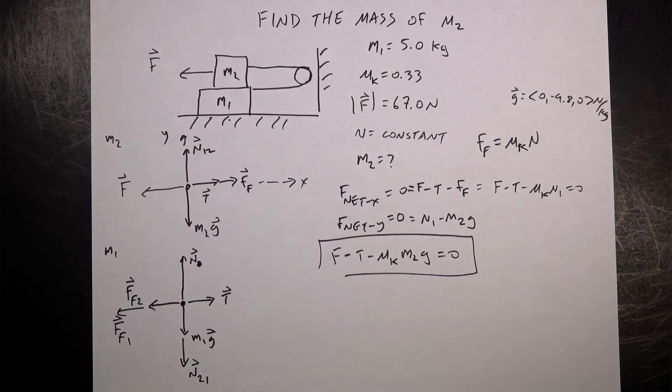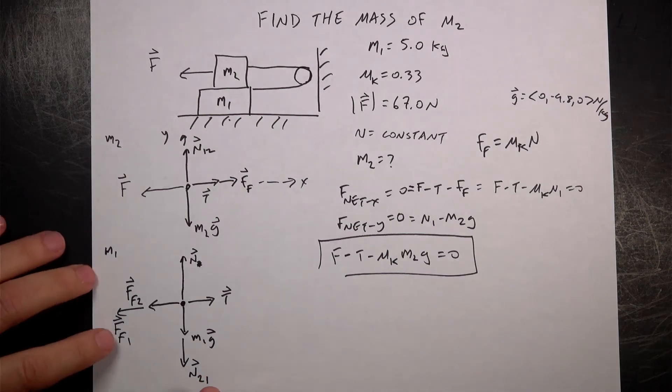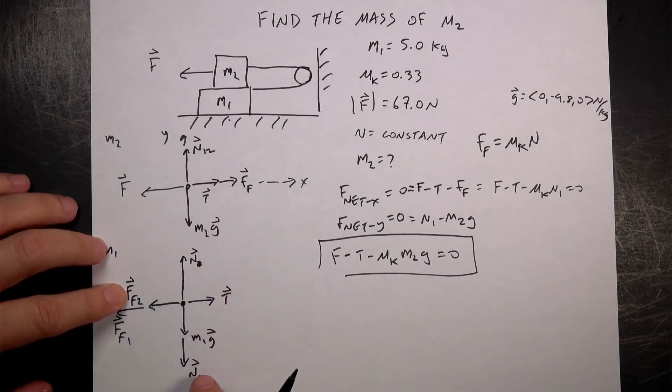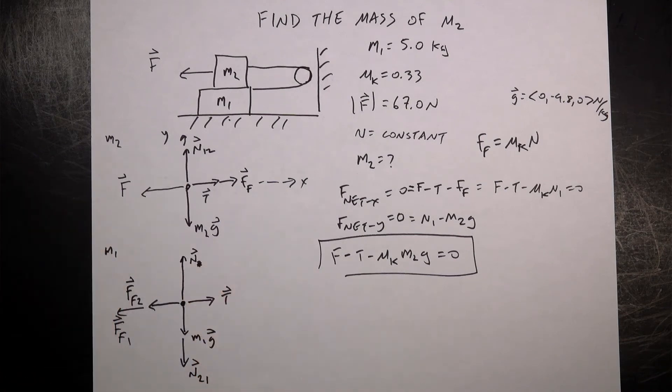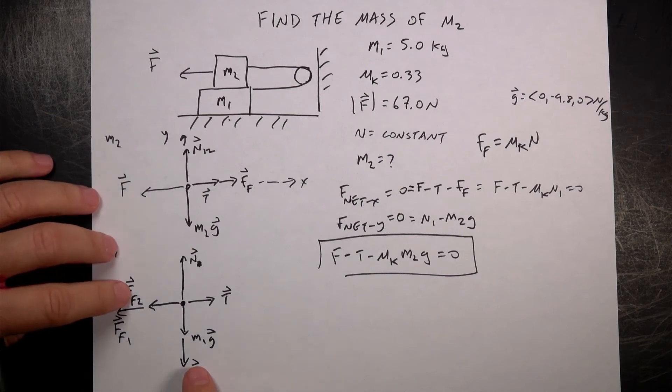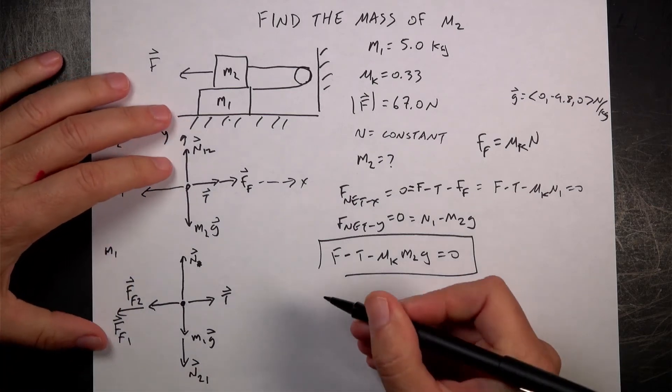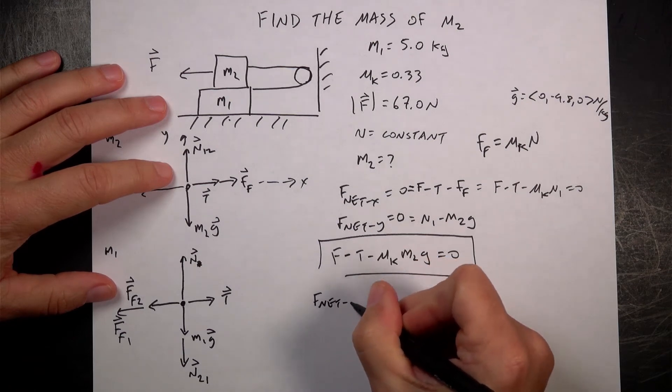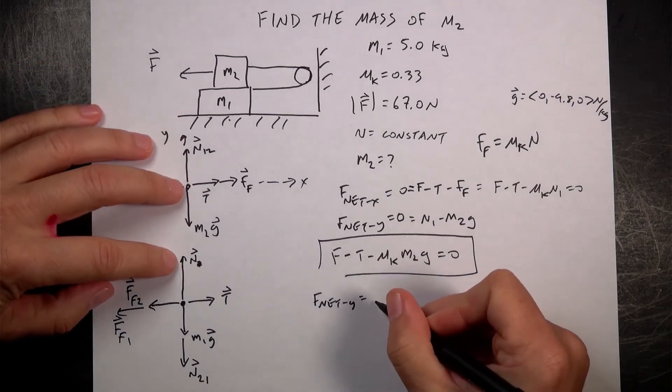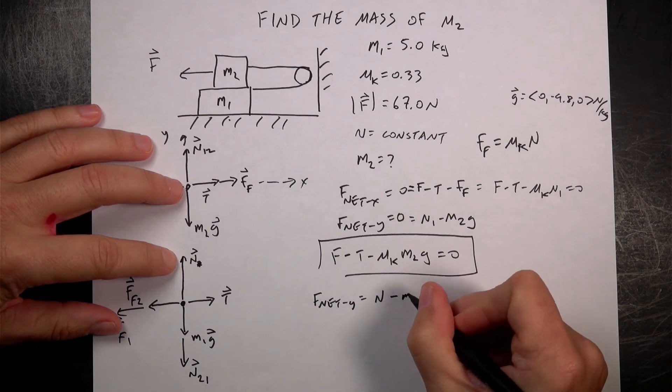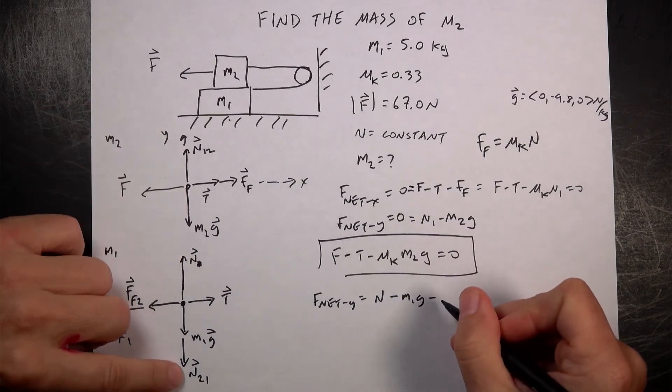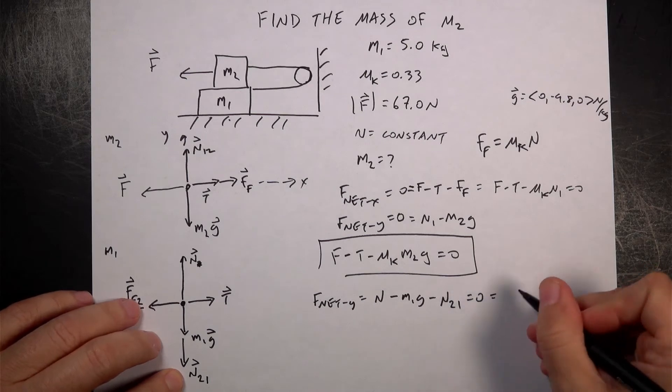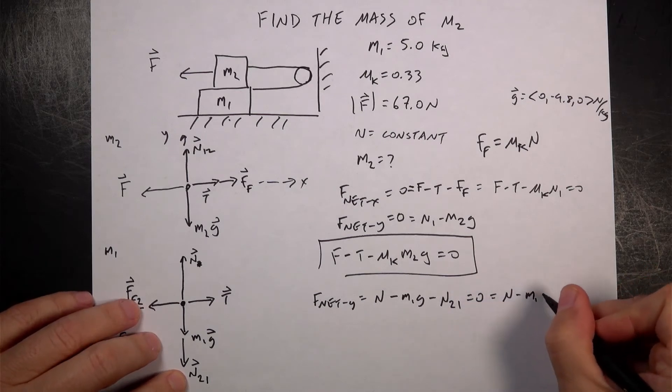So this is a mess. This is a mess. Now, this friction force is due to that normal force. This friction force is due to that normal force. And I know both those values. I already know this one, right? Because I used it above. So let's say, let's do the Y first. F net Y is going to be equal to N minus M1G minus N21 equals 0. And that's going to be equal to N minus M1G.